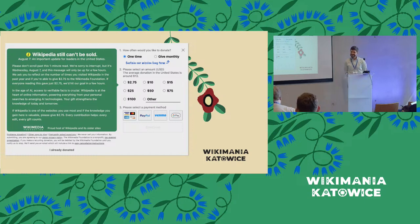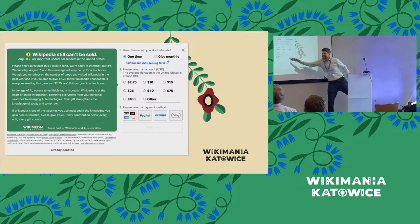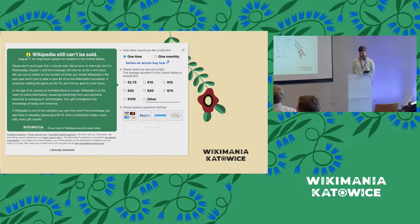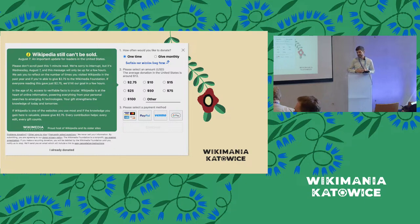A participant suggests the 'other ways to give' link should appear under the 'please select a payment method' section, since it's a link to give money and logically belongs inside the giving part of the form. Sam agrees, noting they have designs that create more space for secondary actions. A further point: fewer links in the small print would make the banner less tall and fill the empty blank space visible in the bottom right corner.